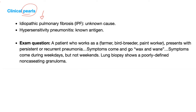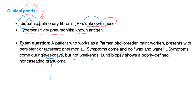Clinical pearls: idiopathic pulmonary fibrosis has an unknown antigen, but hypersensitivity pneumonitis has a known antigen. The exam question will mention a patient who works as a farmer, bird breeder, paint worker, etc., presenting with persistent or recurrent pneumonia. Symptoms wax and wane — they come during weekdays when the patient is in contact with the antigen, but not on weekends when they are not. Lung biopsy will show a poorly defined non-caseating granuloma. Keep in mind: if the patient works on weekends, symptoms will occur on weekends. It depends entirely on the patient's schedule, which is why you need to take a proper history.